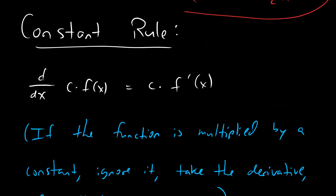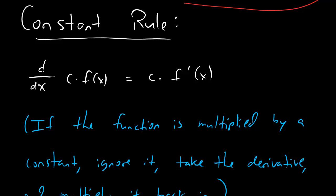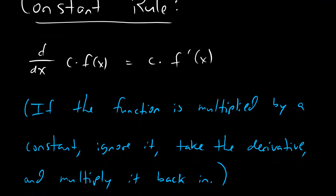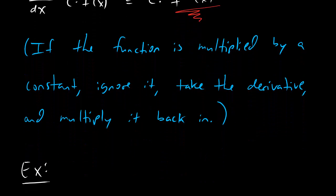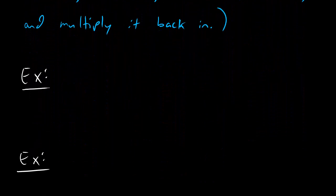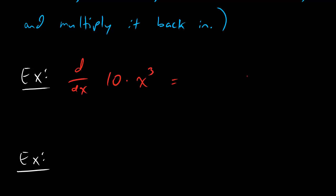And, guys, this constant rule, it might even be the easiest thing of all. Check it out. All it says is that if you see a function with a constant multiplied, all you've got to do is basically go ahead and take the derivative of the functioning part, ignore the constant completely, but then just multiply it back in when you're done. So, as always, looking at the formula is not the easiest way to think about it. Let's do some quick examples. Let's say I've got the derivative of 10 times x cubed. What the formula says to do is first just take the derivative of x cubed. So, x cubed becomes 3x squared. And here we just completely ignored the 10. But now that we're done with the derivative, we have to multiply the 10 back in. And that's it, people.